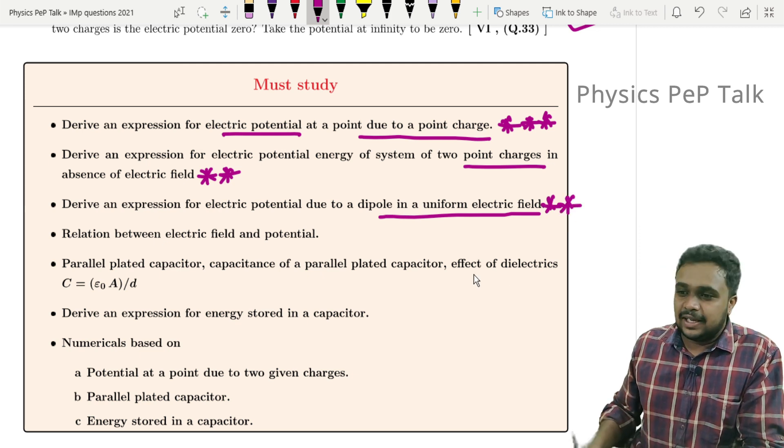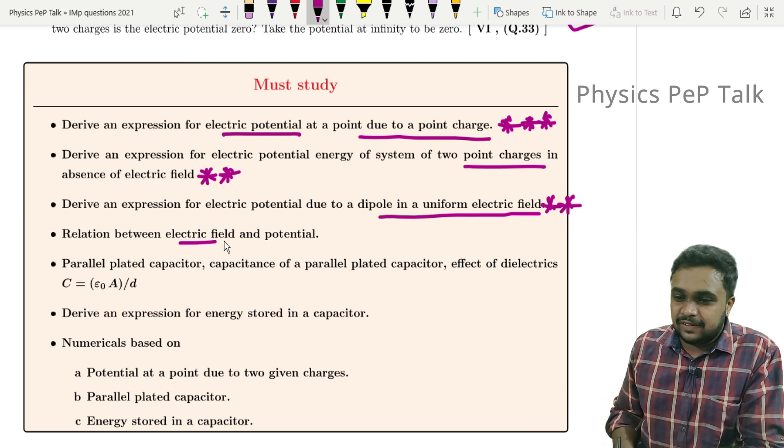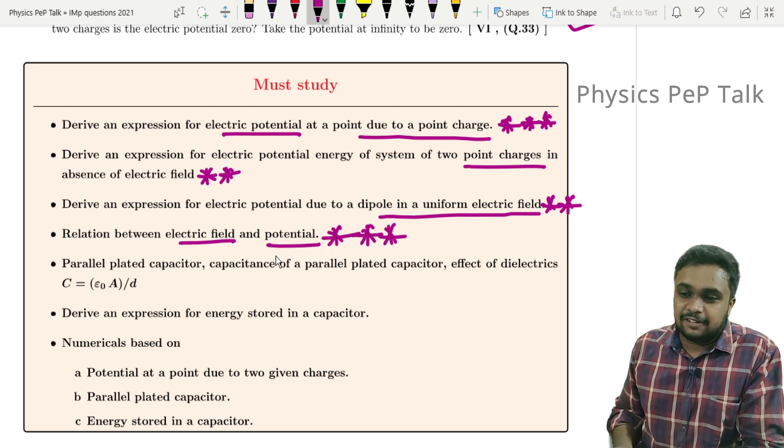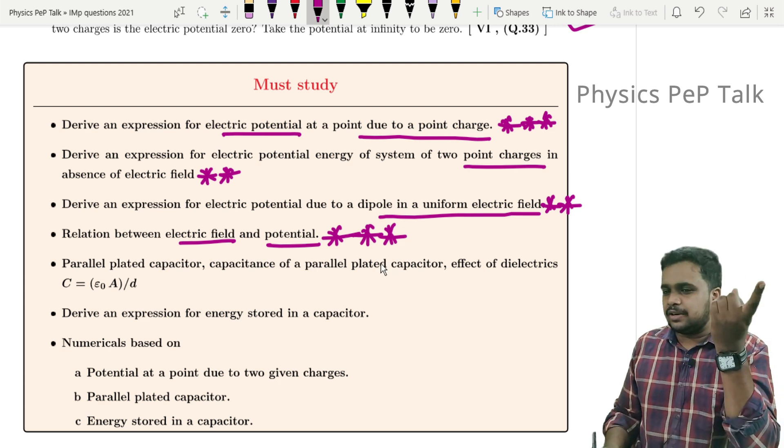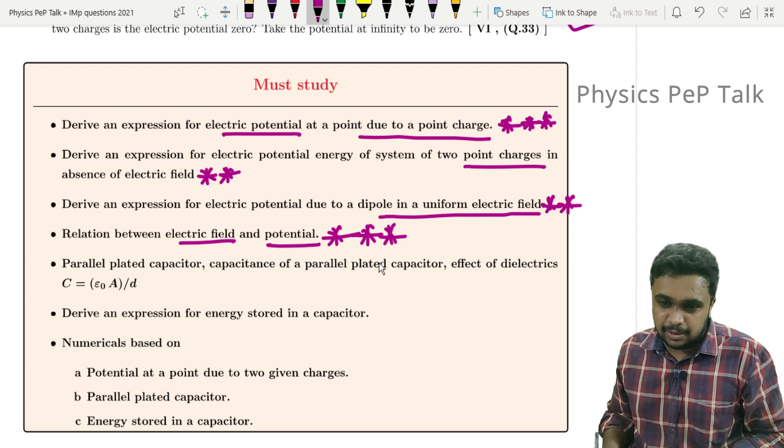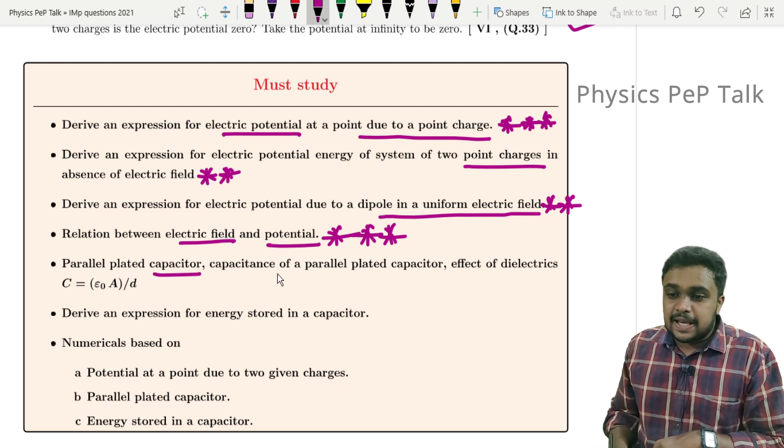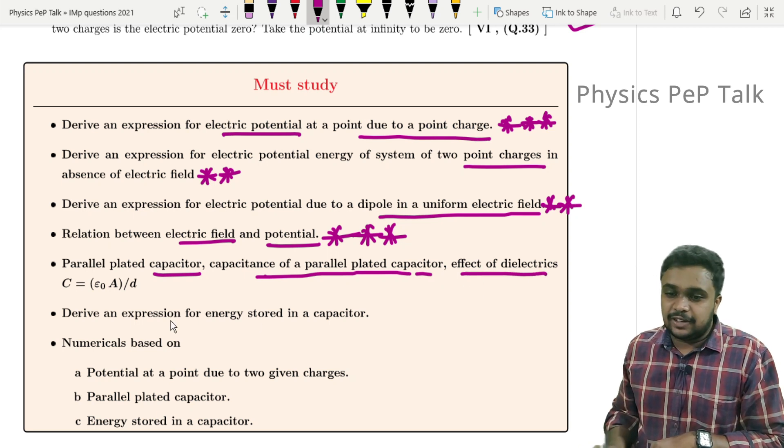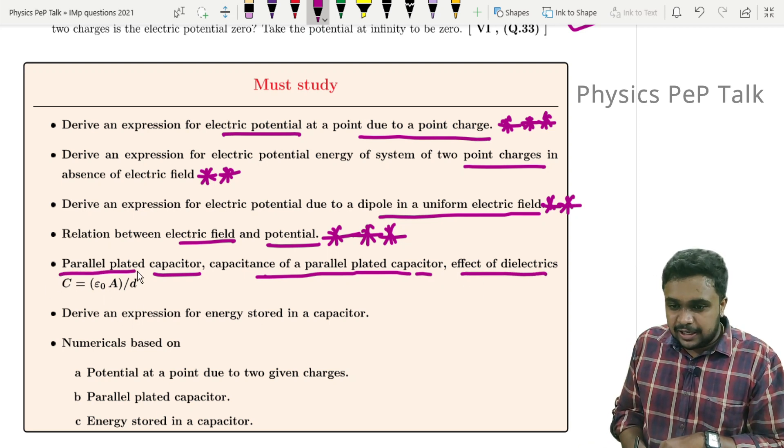Next, relation between electric field and potential - either just write the expression for relation connecting the electric field and potential for one mark, or derive the expression for 2 to 3 marks.